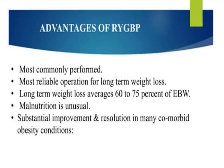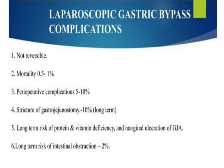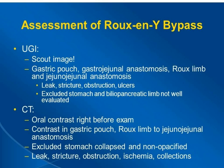The advantage of the Roux-en-Y is that it's the most commonly performed bariatric procedure. About 60 to 75% of excess body weight will be lost. Malnutrition is unusual, though like any surgery it has complications. For assessment by upper GIT imaging, on the scout view we look at the gastric pouch, the gastro-jejunal anastomosis, and the Roux limb with the jejuno-jejunal anastomosis — looking for leak, stricture, obstruction, and ulcers.